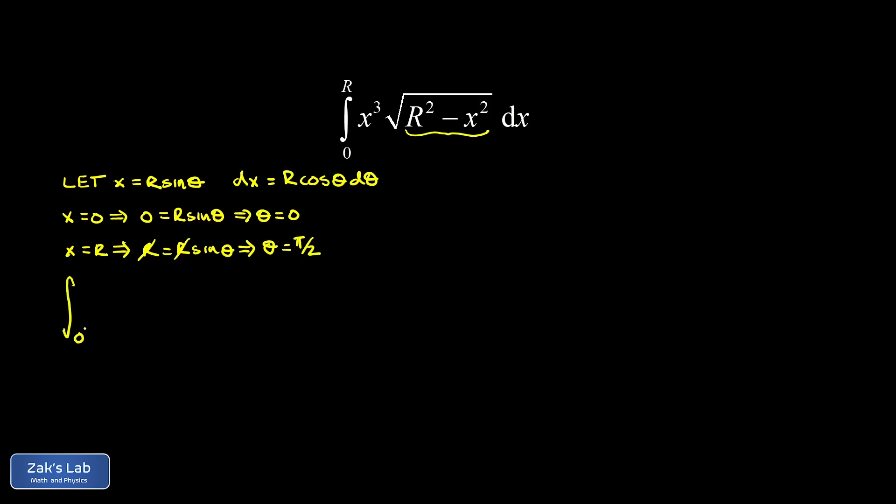So now I can transform my entire integral in terms of theta. I still have a lower limit of 0, but now my upper limit is a theta limit, and that upper limit is pi over 2. Now my x cubed has to be replaced in terms of theta, and x is r sine theta. So I have r sine theta all raised to the third power, and then I have the square root of r squared minus r squared sine squared theta.